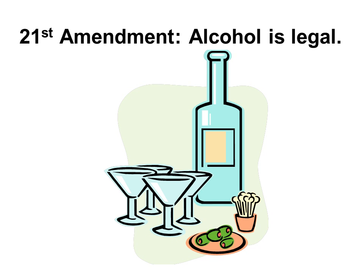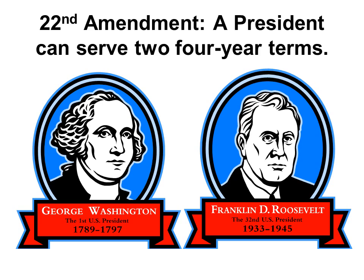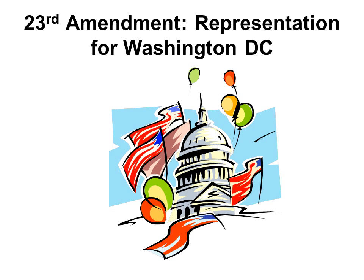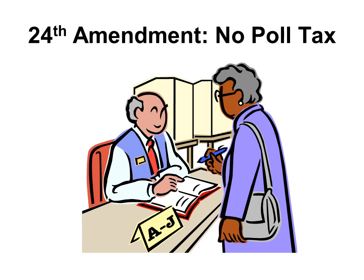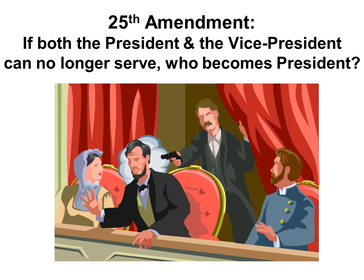The 21st amendment said that alcohol is legal. The 22nd amendment said that a president can serve only two four-year terms. The 23rd amendment guaranteed representation for the people of Washington D.C. The 24th amendment prohibited poll tax — when you go to vote, you do not pay and you do not take a literacy test. The 25th amendment talks about who becomes president if the president and vice president can no longer serve.